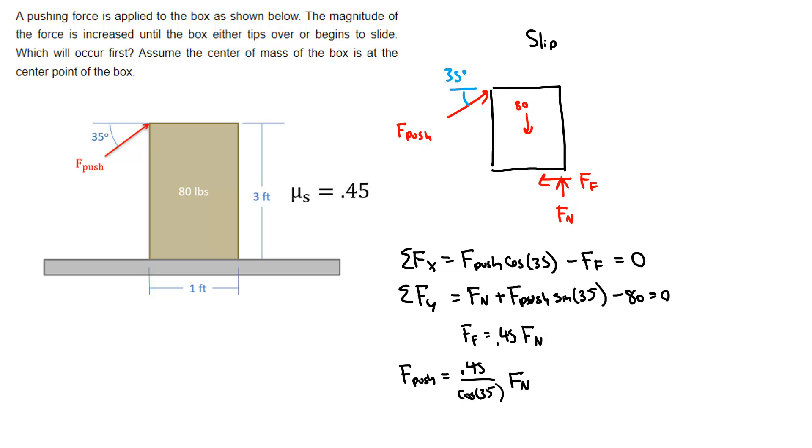Or sorry, sine 35 is for F_push. So times sine 35 minus 80 plus Fn, that needs to be equal to 0. In this case, I've got one equation with one unknown.